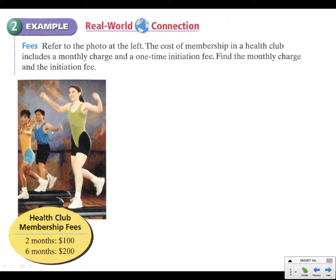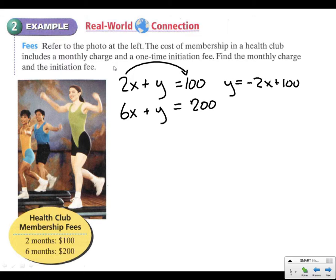Refer to the photo at left. So that is just a fantastic 1980s Jane Fonda workout video going on here. The cost of membership in a health club includes a monthly charge and then a one-time initiation fee. Find the monthly charge and the initiation fee. So a monthly charge is going to be something X. But if we pay that monthly charge for 2 months, so 2 times X, plus we had to pay the initiation fee, then we would have ended up paying $100. The other one says if we were paying the fee for 6 months, plus that initiation fee, we must have been paying $200.